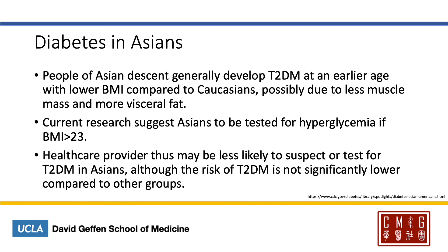Lastly in this lecture, let's talk about diabetes. According to the CDC, people of Asian descent generally develop type 2 diabetes at an earlier age and with a lower BMI compared to Caucasians. The possible reason is due to less muscle mass and more visceral fat. Current research suggests Asians should be tested for hyperglycemia if their BMI is more than 23, compared to more than 25 in Caucasians. However, due to body habitus, healthcare providers may actually be less likely to suspect or test for type 2 diabetes in Asians, although the risk is not significantly lower compared to other groups.